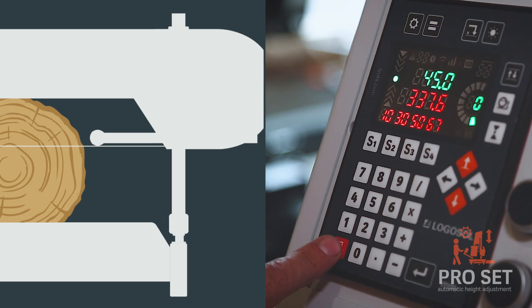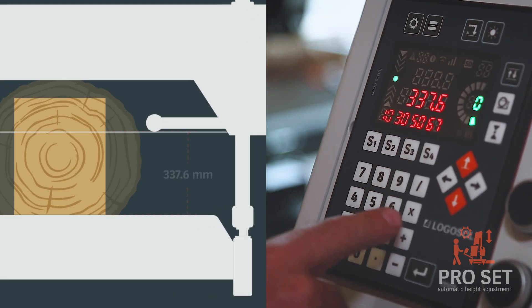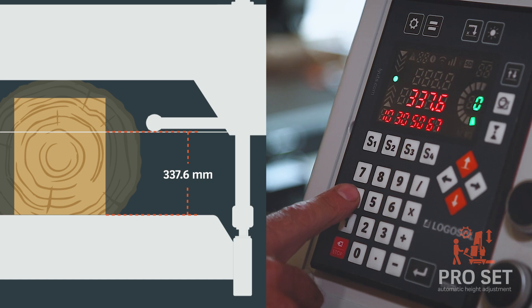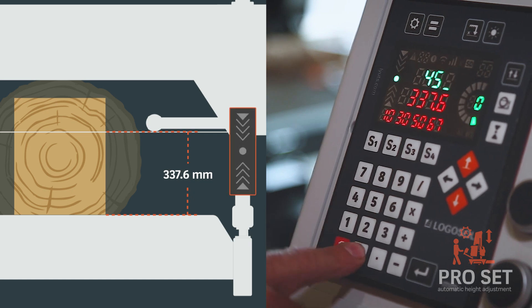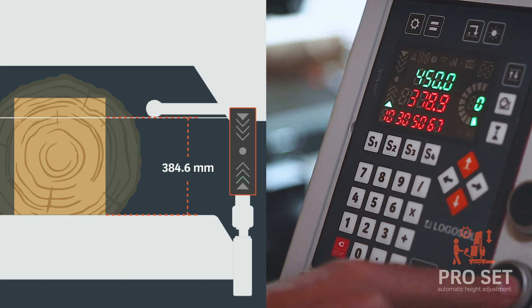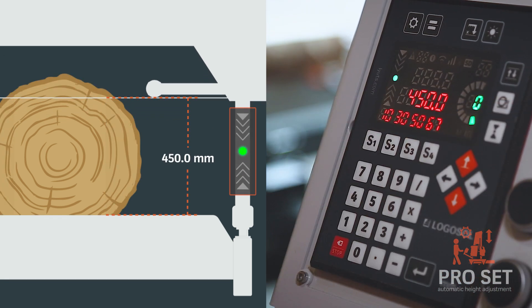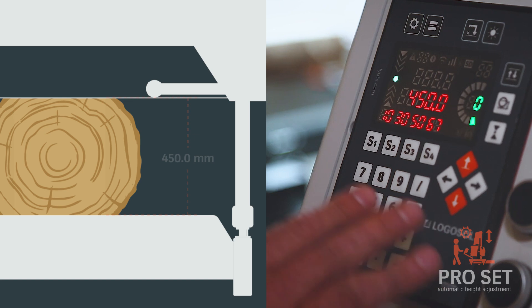You can also go to a height where you want to go. If you want to saw a block, you can say, we want to go to 450, go up. And it will end up at 450 millimeters. Very easy to use.